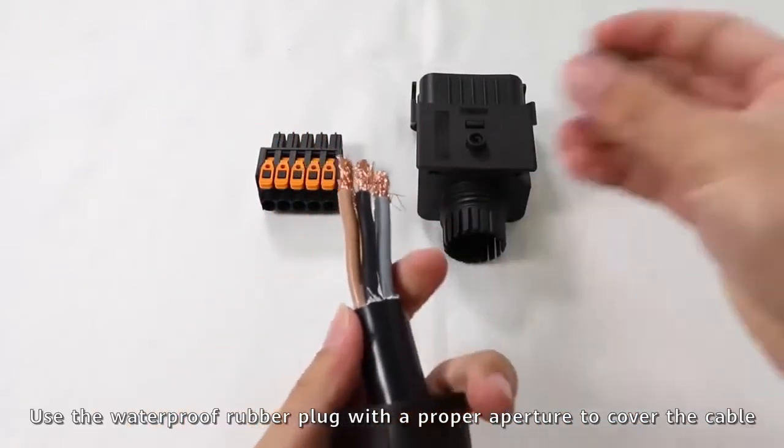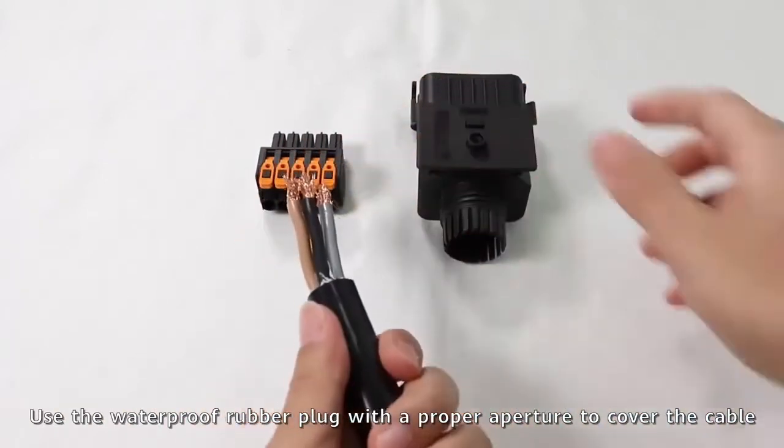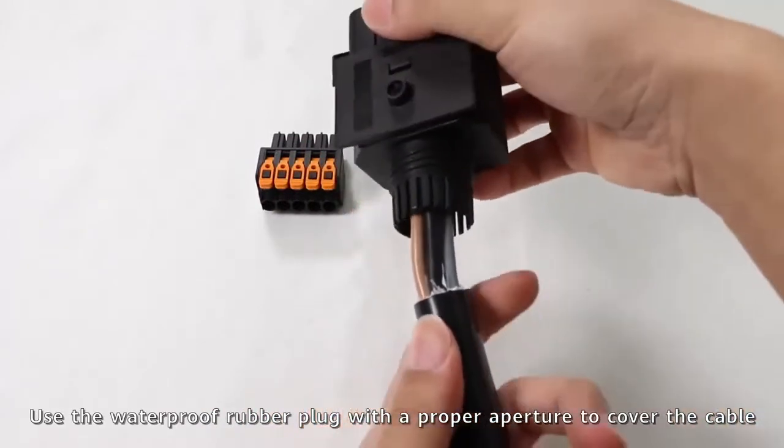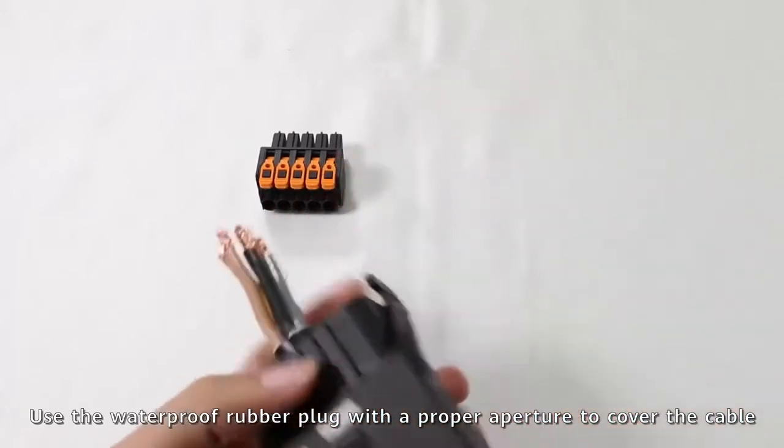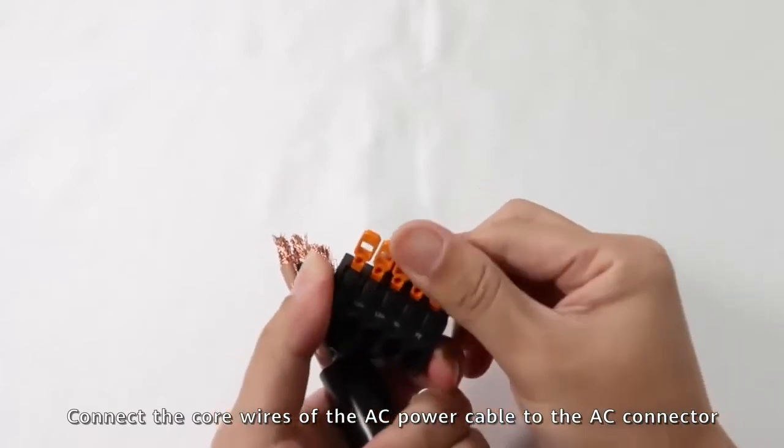Use the waterproof rubber plug with a proper aperture to cover the cable. Connect the core wires of the AC power cable to the AC connector.